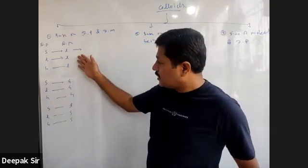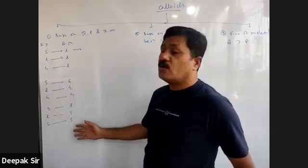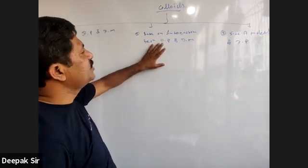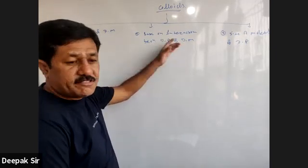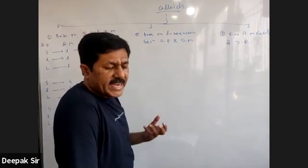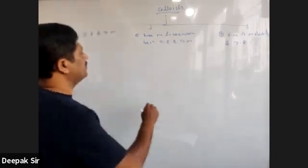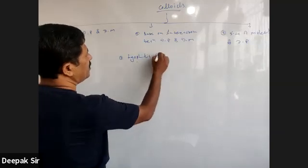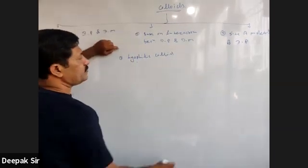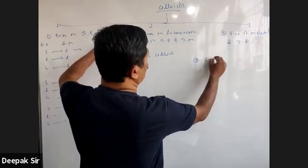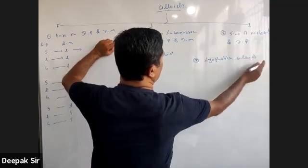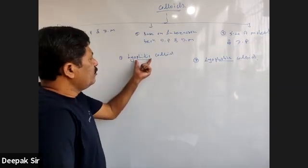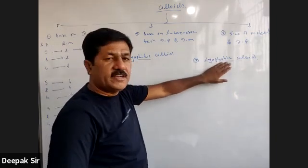We have nine types of solutions based on the states of disperse phase and dispersion medium. Now moving to the next classification — based on the interaction between dispersed phase and dispersed medium — we have lyophilic and lyophobic colloids. 'Philic' means attraction and 'phobic' means phobia, a kind of fear or dislike.